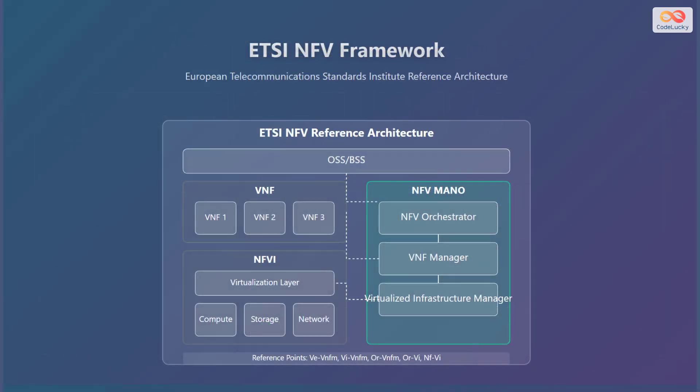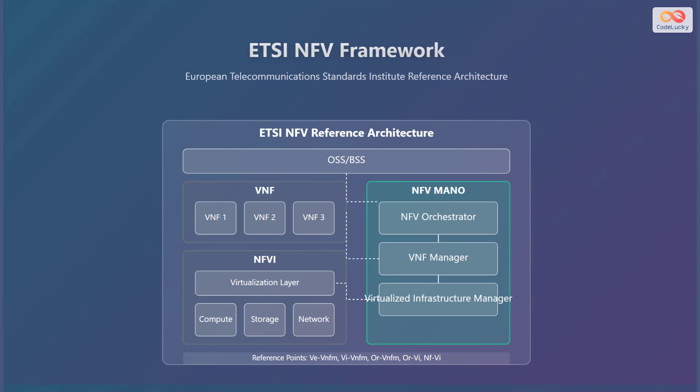The European Telecommunication Standards Institute, or ETSI, NFV framework is a reference architecture that defines the components and interfaces for network function virtualization. At the top, we have the operation support systems and business support systems, or OSS-BSS, which interface with the NFV orchestrator. The NFV management and orchestration block, or MANO, includes three main components: the NFV orchestrator, responsible for orchestrating network services; the VNF manager, which manages the lifecycle of virtual network functions; and the virtualized infrastructure manager, which controls the virtualization infrastructure.